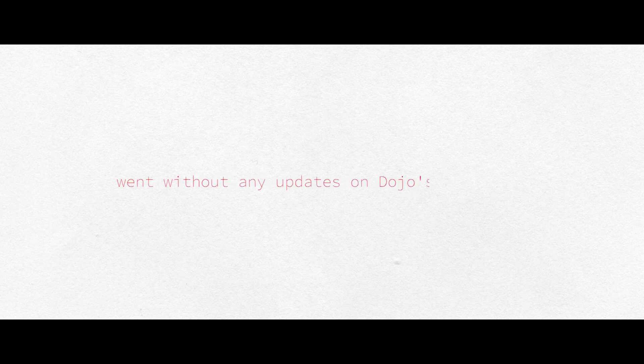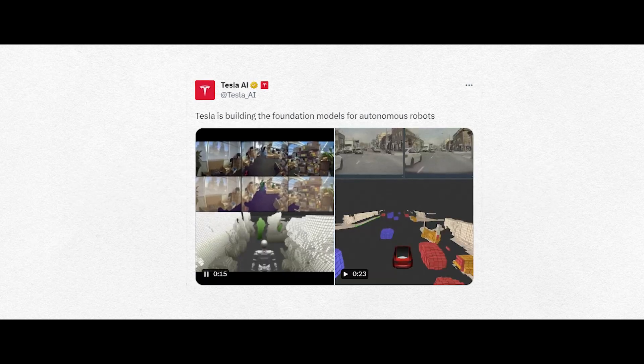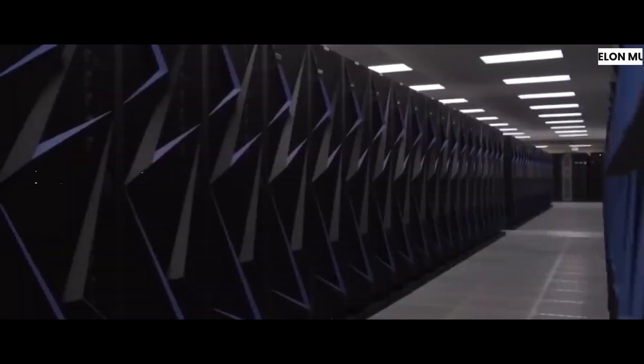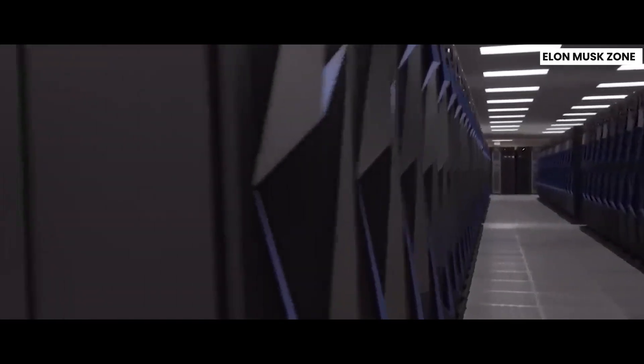However, the first quarter came and went without any updates on Dojo's operation. But fear not, Tesla has now given us an update through their new Tesla AI Twitter account. According to Tesla, Dojo is finally going into production in July. That's right around the corner. It means they're ready to kick things into high gear and bring this incredible supercomputer to life.